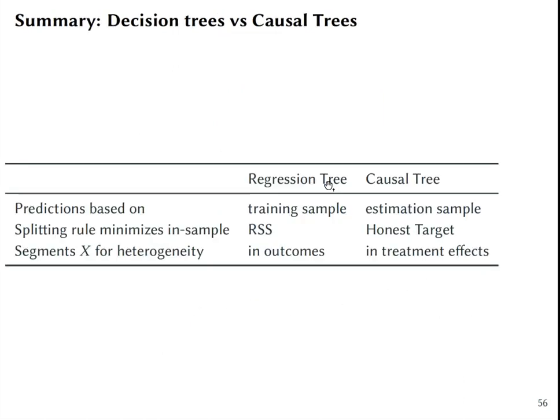So to summarize the difference between regression trees and causal trees. In regression trees, you base predictions on training sample and causal tree based on estimation sample. Splitting rule minimizes in-sample sum of squared residuals and causal tree minimizes in-sample honest target. Regression trees segments X for heterogeneity in outcomes, while causal trees segments X for heterogeneity in treatment effects.